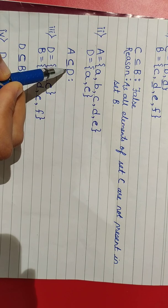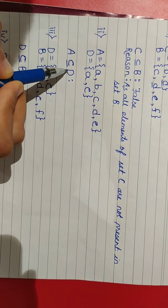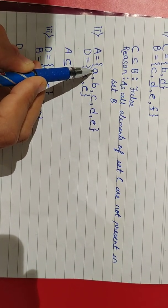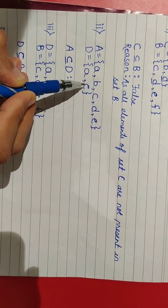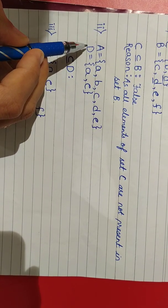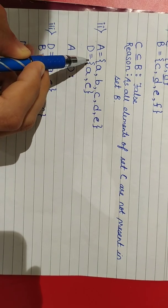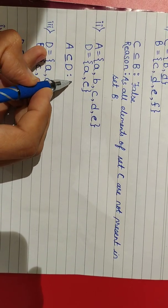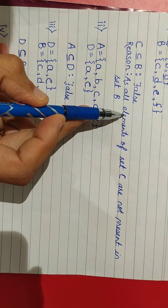Is A subset of D? To prove A is a subset of D, all elements of set A should be present in set D. Elements in A are A, B, C, D, E, and set D contains A, E. Are all the elements of set A part of set D? No. Set A is a bigger set — it contains extra elements other than those in set D. Therefore, this statement A ⊆ D is false.